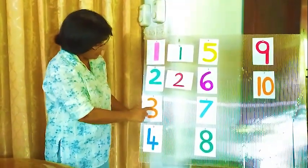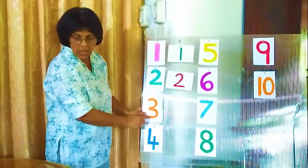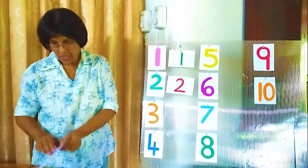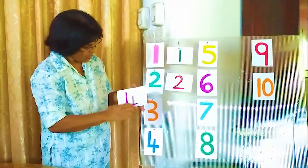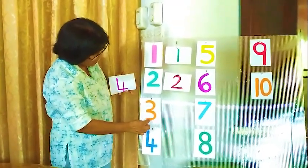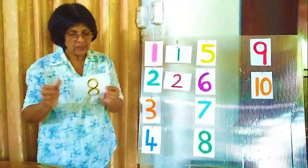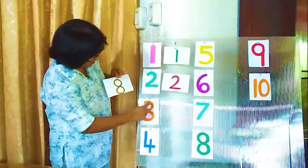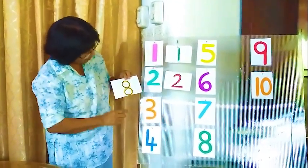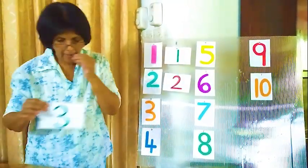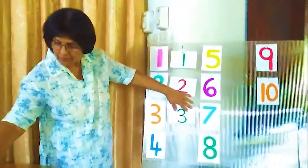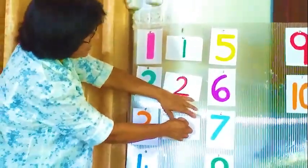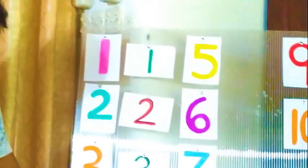Now here number three. We will find number three. Is this number three? No, this is four. Number three — we have to find number three. Is this number three? No, this is number eight. What about this? Is this number three? Yes. This is number three. Number 3, number 3, number 3.